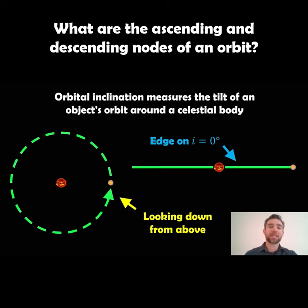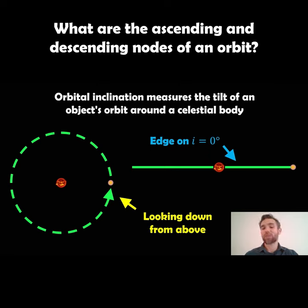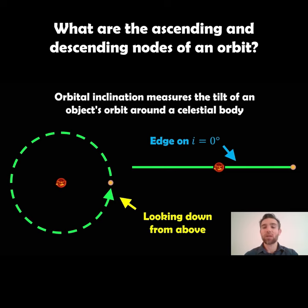The first thing we need to consider is the orbit inclination. On the left hand side you're looking top down onto a circular orbit, but if we look edge on then we're just looking at the plane of the orbit. That example has an inclination angle of zero — it's completely horizontal from our reference point.